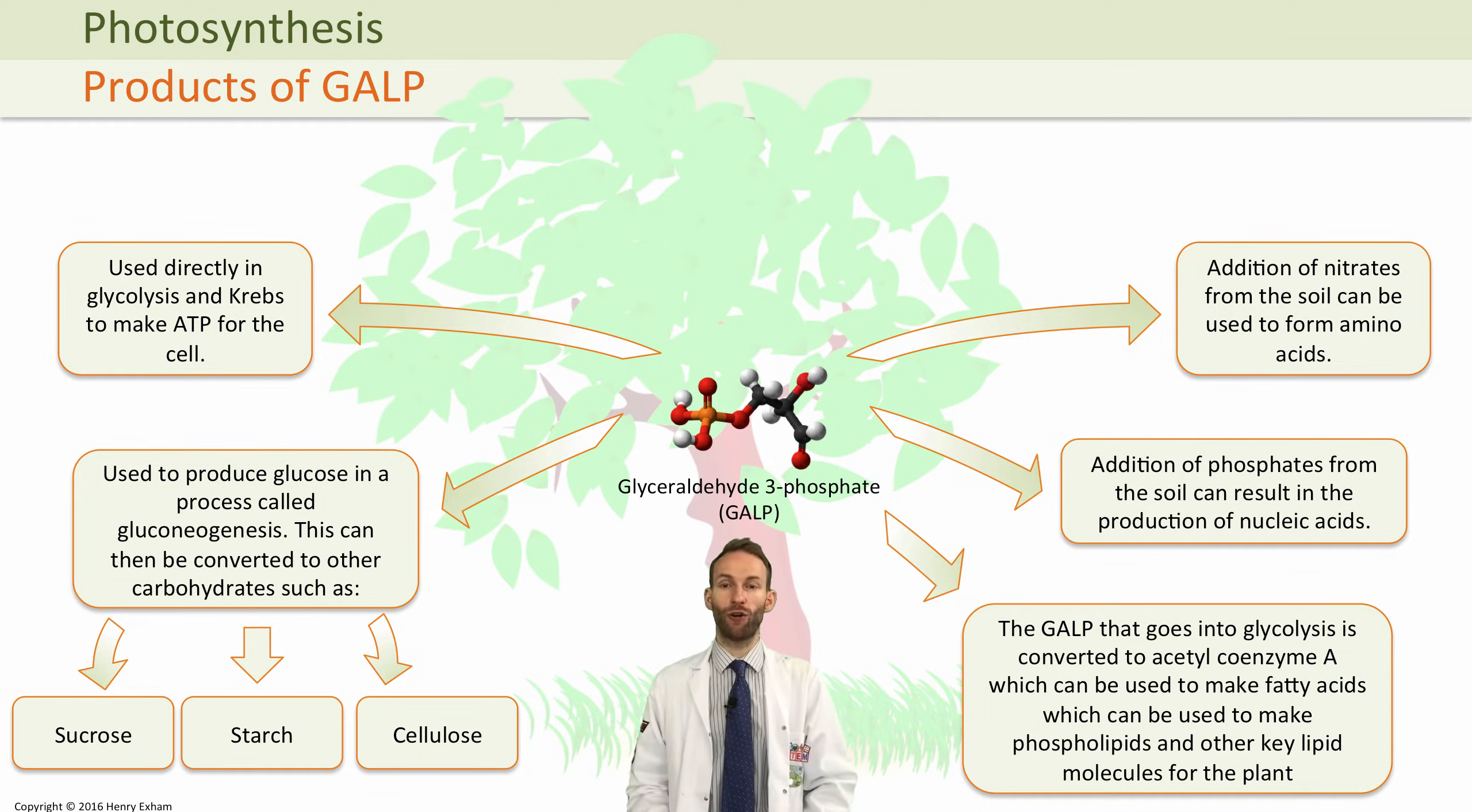Really, GALP, this product of the Calvin cycle, is the main thing the plant needs to make pretty much all of its structures.